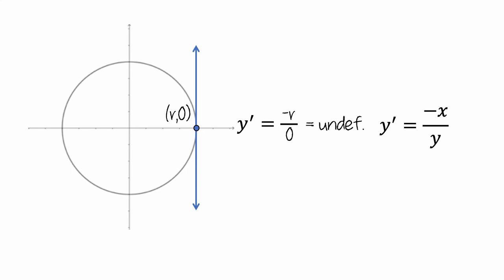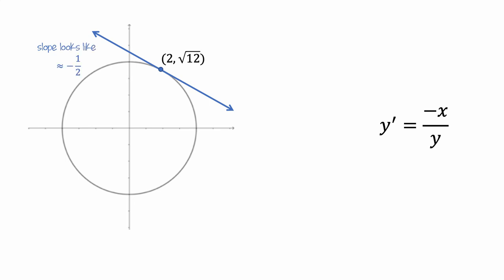What about at one more point? How about the point (2, √12). This tangent line isn't horizontal or vertical, yet it looks like it has a slope of roughly negative 1 half. Our formula says that the slope of this tangent line should be negative 1 times the x-coordinate, so negative 2, divided by the y-coordinate, root 12. This is roughly negative 0.58, which matches what we predicted by looking at the graph.